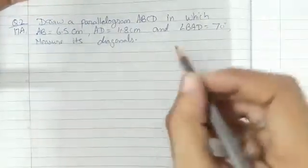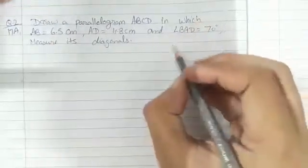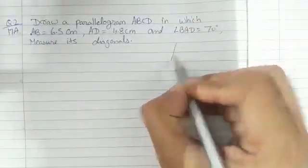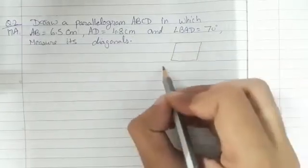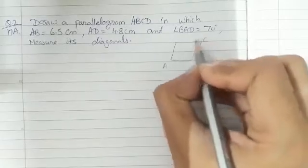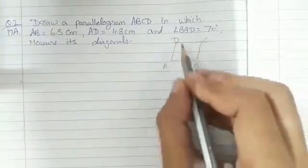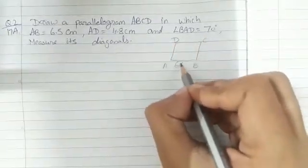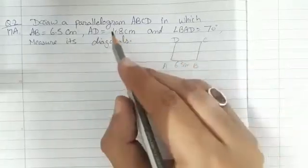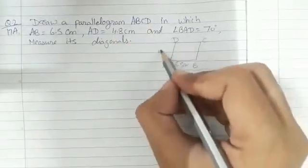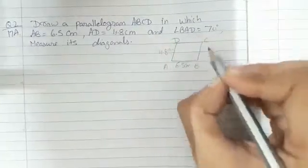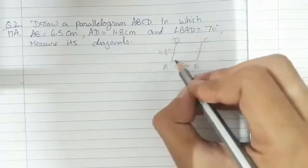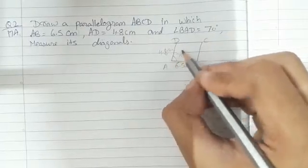To draw this parallelogram, first we draw a rough diagram. We label the vertices A, B, C and D. In the rough diagram, AB measures 6.5 cm, AD measures 4.8 cm, and angle BAD is 70 degrees.